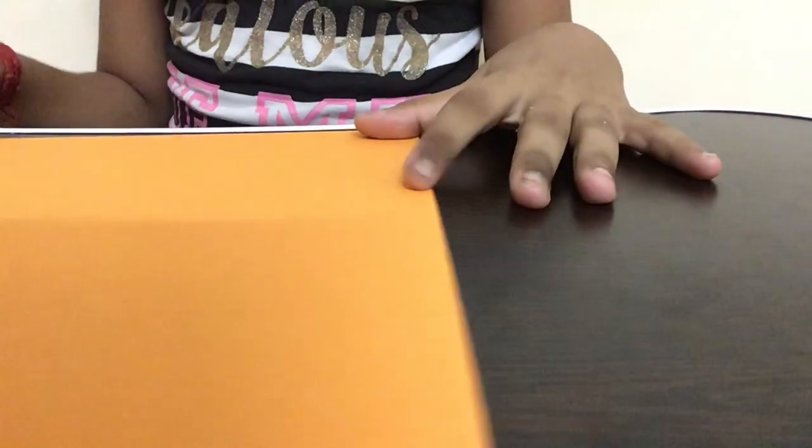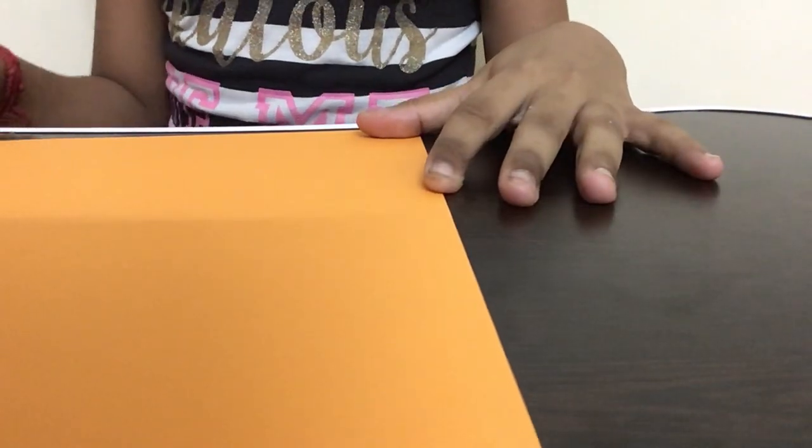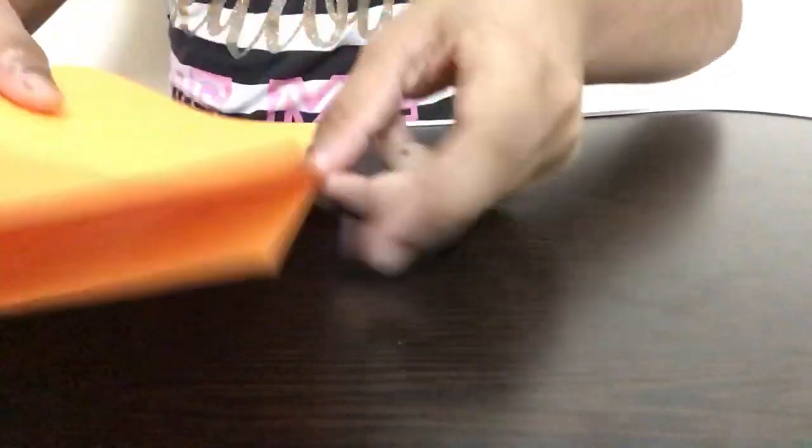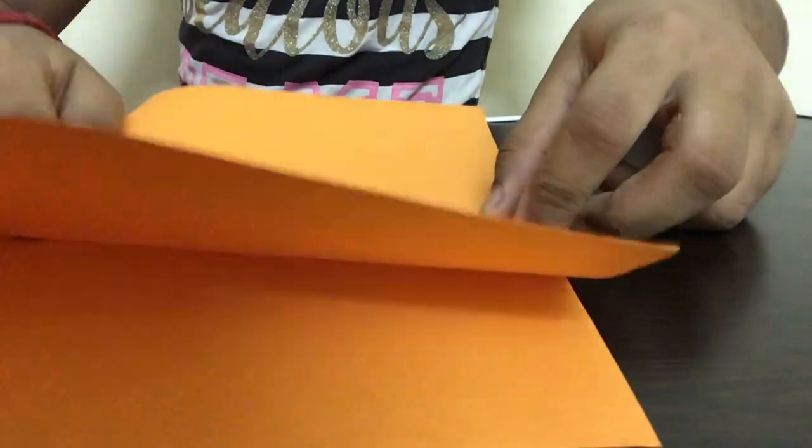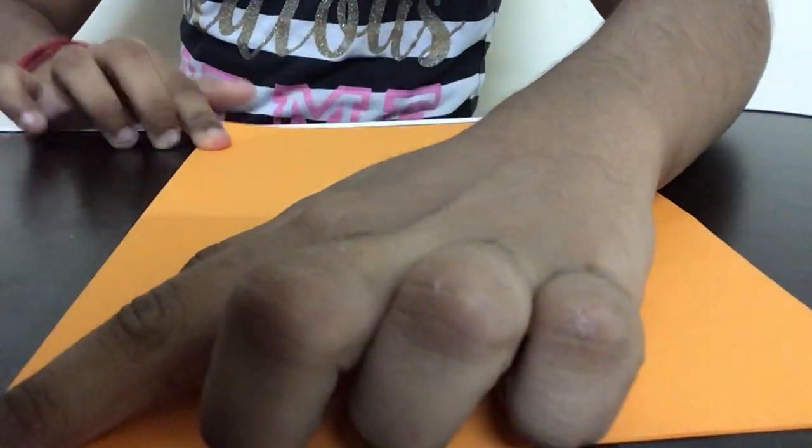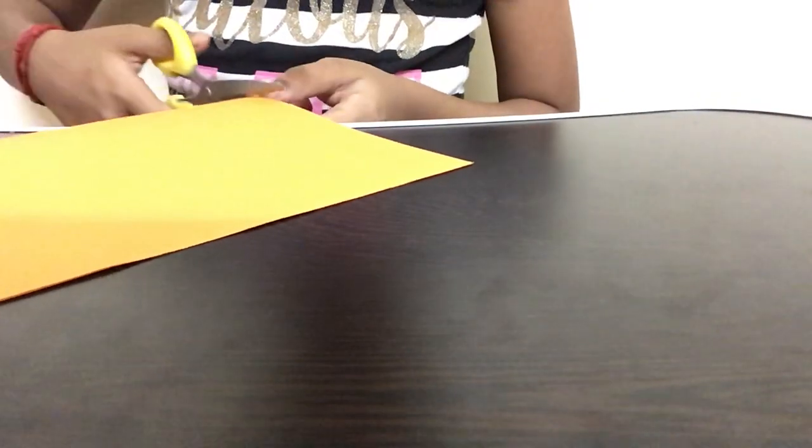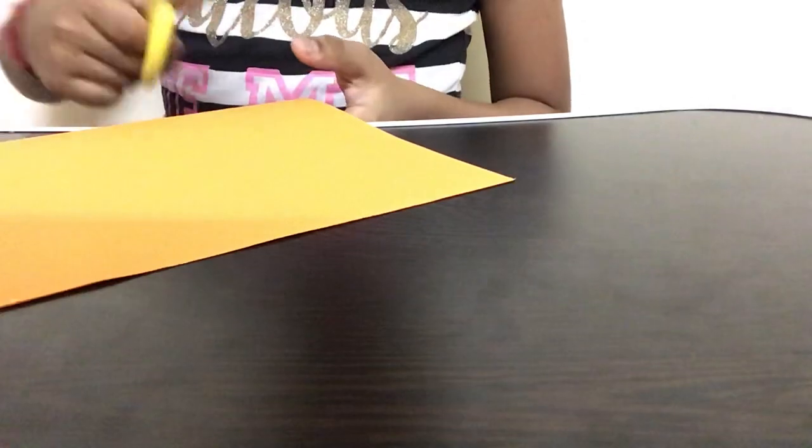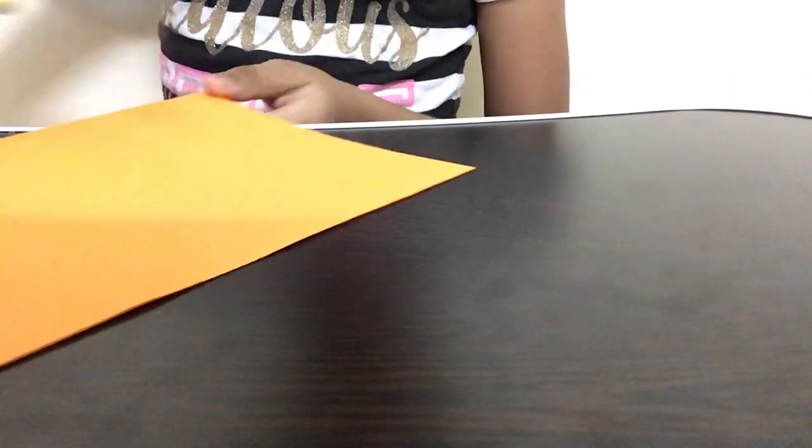The first step is that we have to fold the paper in half. Step number two is that we have to take a pair of scissors and we have to cut the paper into small strips. We have to cut it until about half of the paper.